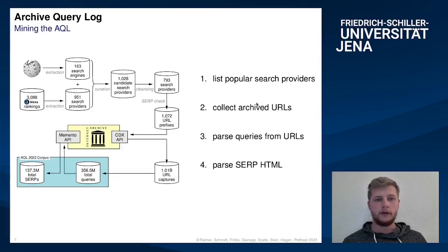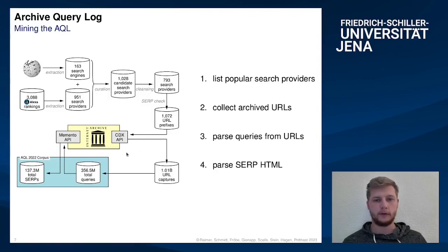Let me now show you an overview of how to mine the AQL from the Internet Archive. First, we list all popular search providers. Then we collect a list of all archived snapshots of SERPs from these websites and parse the queries from the URL. Finally, we download and parse the SERPs' HTML contents to get the result snippets.